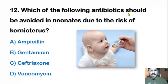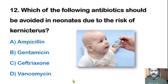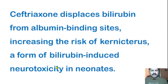Twelfth question: Which of the following antibiotics should be avoided in neonates due to the risk of kernicterus? Options: ampicillin, gentamycin, ceftriaxone, or vancomycin. The correct answer is ceftriaxone. Ceftriaxone displaces bilirubin from albumin binding sites, increasing the risk of kernicterus, a form of bilirubin-induced neurotoxicity in neonates.